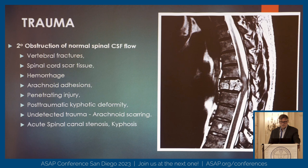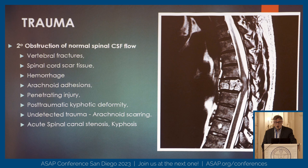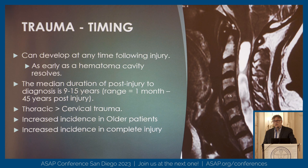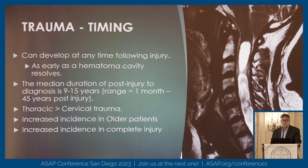Trauma can lead to obstruction of CSF flow for a myriad of reasons — fractures, scar tissue, hemorrhage, arachnoid adhesions from inflammatory response, a penetrating injury — all of which can create a compromise that's difficult to surgically address. The timing is also difficult because the duration following injury to diagnosis could range from one month to 45 years. So there's an extraordinarily long period of time where somebody can develop a syrinx and then have progression, making it very difficult to relate to any cause.